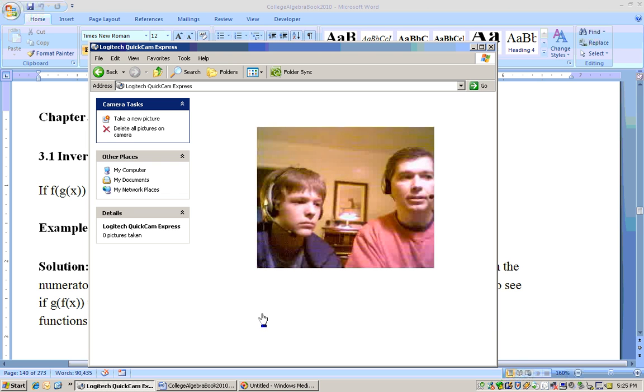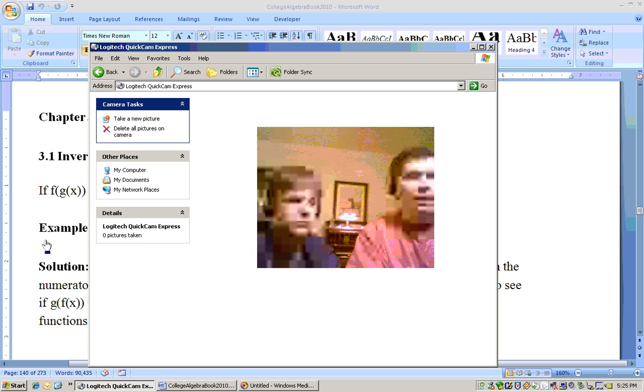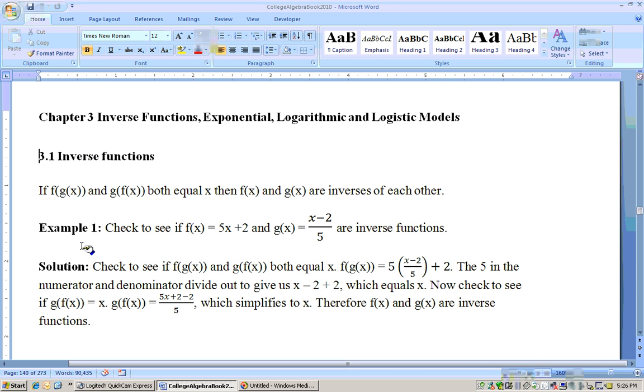All right, we're going to start Chapter 3, and I've got my assistant here, Chris. Here's Chapter 3, Section 3.1 on inverse functions. If f of g of x and g of f of x both equal x, then f and g are inverses of each other. That's the definition you need to know.